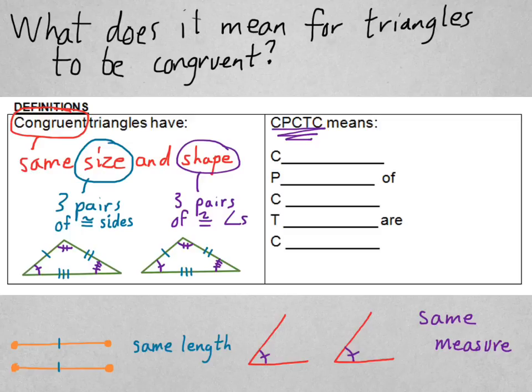Now, for this thing called CPCTC. That's an abbreviation that we use for just a fact or property about congruent triangles when we refer to things being the same. So here's what it means. Corresponding parts of congruent triangles are congruent. Let's break that down.